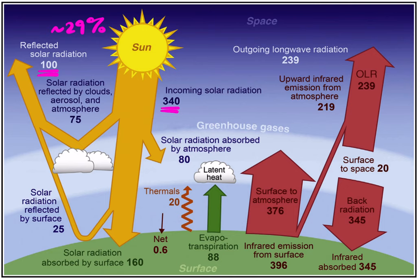Of that radiation reflected back to space, 75 watts per meter squared are reflected by clouds, and 25 watts per meter squared are reflected by the Earth's surface. If you do 340 minus 100, that gives us 240 watts per meter squared — that's the amount of energy from the Sun that must be absorbed by components in the Earth's system.